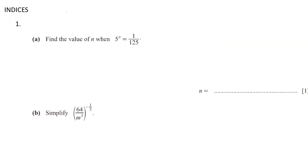Indices question 1: Find the value of n when 5 to the power of n is equal to 1 over 125. This is called the base and this is called the index or the power. Whatever number you have, try to make it to the power of 5 — whatever base is given, make the other side that same power. You get 5 to the power of n is equal to 1 over 5 to the power of 3.